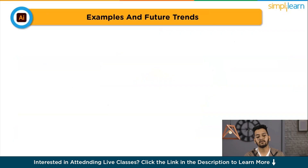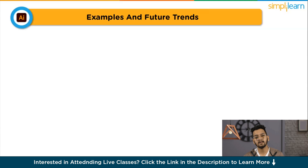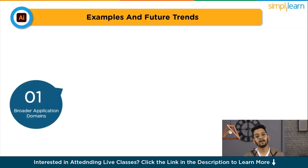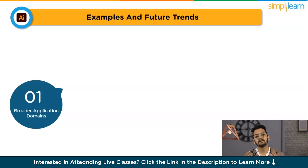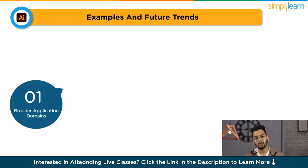Let's discuss future trends and examples. Predicting specific future trends in AGI is challenging, but we can anticipate some general directions based on ongoing research and advancements in the field. The first potential trend is broader application domains — future AGI could extend its capabilities to diverse domains beyond the current scope of specialized AI. Examples include advanced problem solving in science, engineering, and creativity, where machines can contribute novel ideas and solutions.